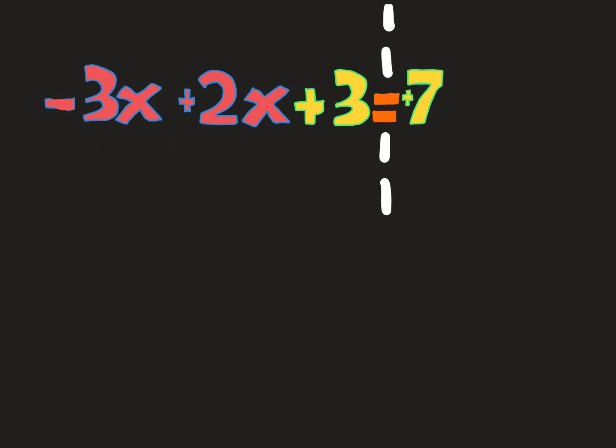But now I need the plus 3 over on the other side, so I'm going to pick it up and start to move it, and when it hits the barrier, it turns into a negative 3, and I can put it over on that side.